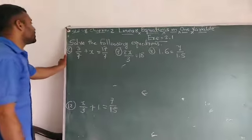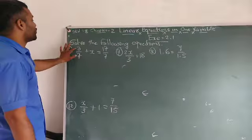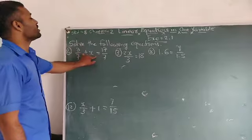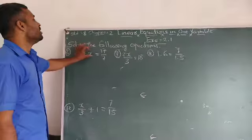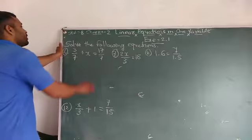So now we start the 4th example. Question is 3/7 + x = 17/7. Variable is x. So now, first of all,